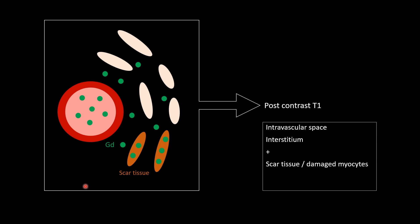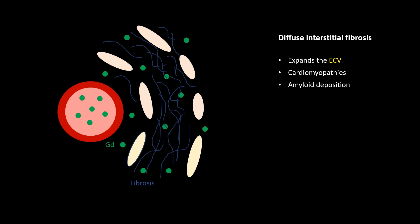This is a post-contrast T1 mapping image. Gadolinium gets deposited in the interstitium and in damaged cells, scar tissue, or fibrosis. So the signal for post-contrast T1 mapping comes from the interstitium and scar tissue. Diffuse interstitial fibrosis — as occurs in certain cardiomyopathies or amyloid deposition — causes expansion of the ECV, which we can detect on mapping.